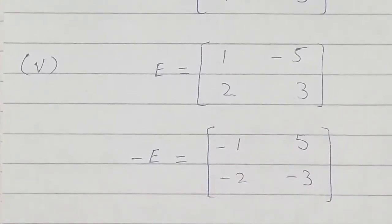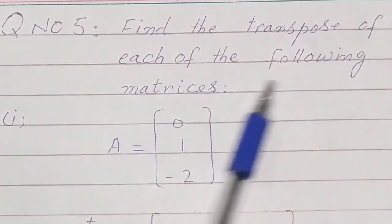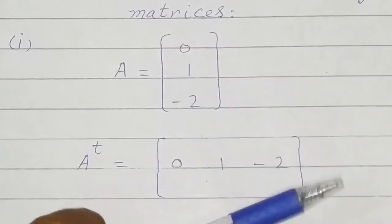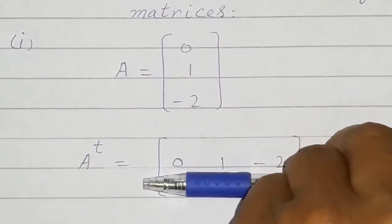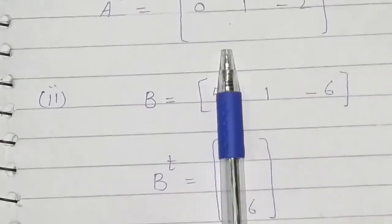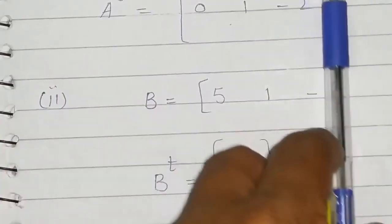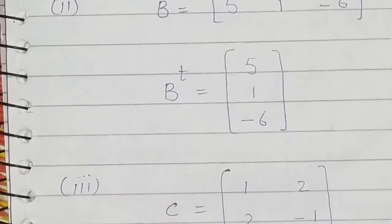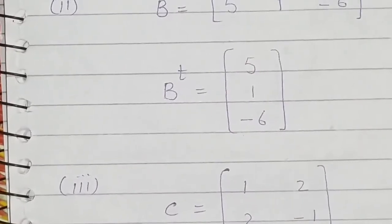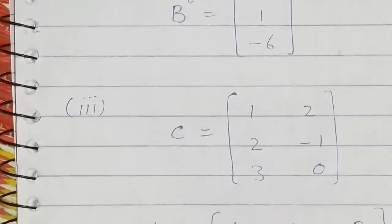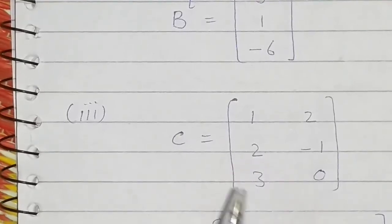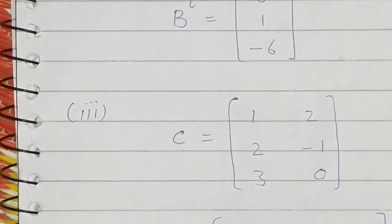Now question number five: find the transpose of each of the following matrices. Transpose means that we change columns into rows. Here a column is made into a row — that is called the transpose. The first column becomes the first row, the second column becomes the second row, and the third column becomes the third row. You can also change rows into columns — it makes no difference, the end result is the same. But you are not allowed to do both at the same time; only one conversion at a time.